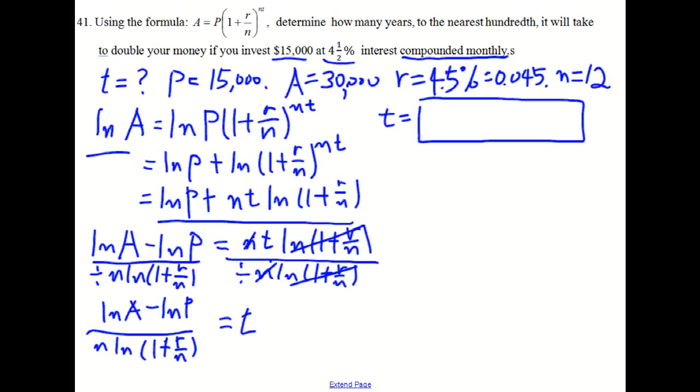Now we plug in all the given quantities into this equation. So then t equals, the numerator is ln of A. A is $30,000 minus ln of P. ln of P is $15,000 over n is 12.